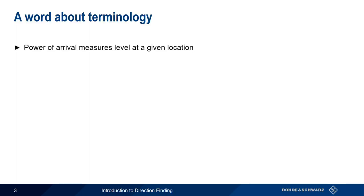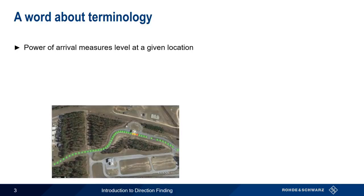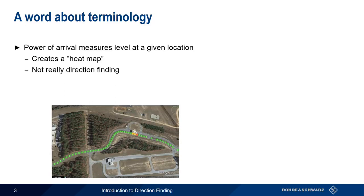Namely, the difference between power of arrival and angle of arrival. We are going to use the expression power of arrival to mean measuring the level at a given location. That is, we simply drive around and record the received RF level at the frequency of interest. Often this information is used to create a heat map, where power is plotted as a function of location. Although this methodology can be used to find the location of radio frequency sources, it is not really direction finding in the strict sense of the word, because we are not finding the direction towards the source.